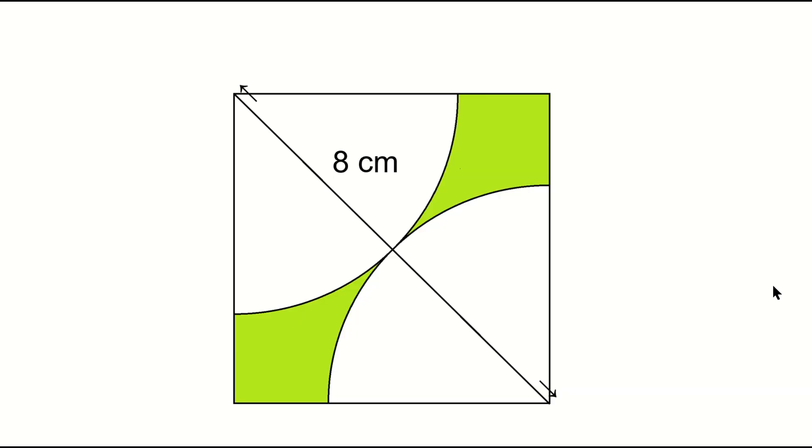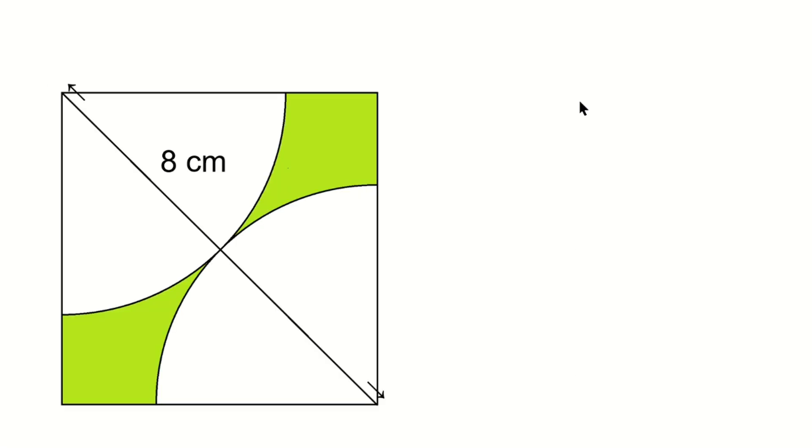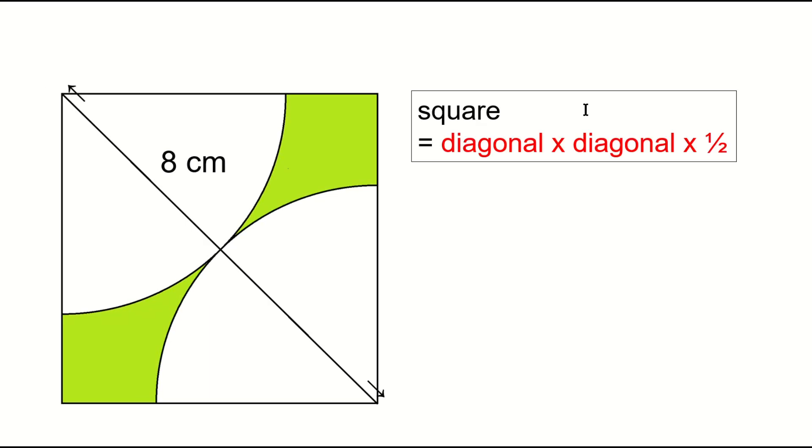So let's go back to the original problem diagram. As I said at the beginning, the area of the green region can be calculated by subtracting the area of the two quarter circles from the square. The area of a square is, the diagonal times the diagonal times 1 half. So 8 times 8 times 1 half, or 32 square centimeters.